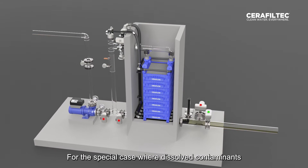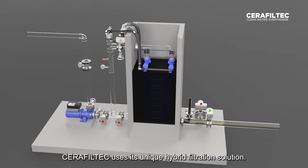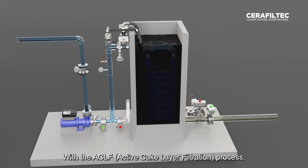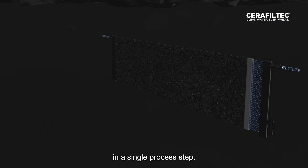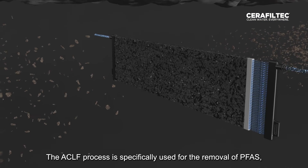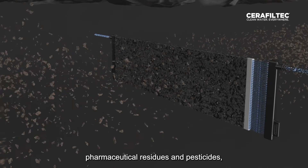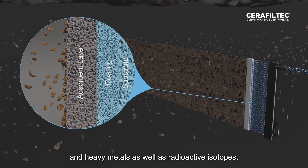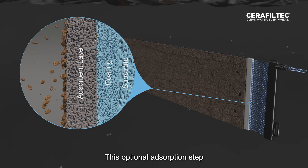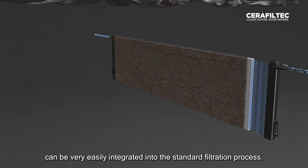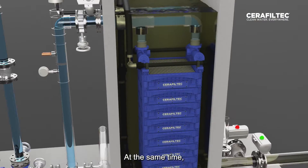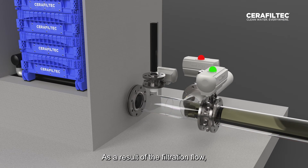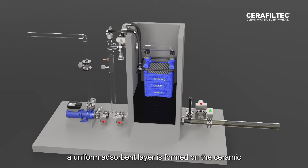For the special case where dissolved contaminants need to be removed as well, Seraphiltec uses its unique hybrid filtration solution. With the ACLF — Active Cake Layer Filtration — process, adsorption is combined with the ceramic flat membrane in a single process step. The ACLF process is specifically used for the removal of PFAS, pharmaceutical residues, pesticides, MIB, geosmin, other dissolved organic carbons, heavy metals, and radioactive isotopes. This optional adsorption step can be easily integrated into the standard filtration process. The ACLF process adds an adsorbent, such as powdered activated carbon, to the inflow, and as a result of the filtration flow, a uniform adsorbent layer is formed on the ceramic membrane surface.